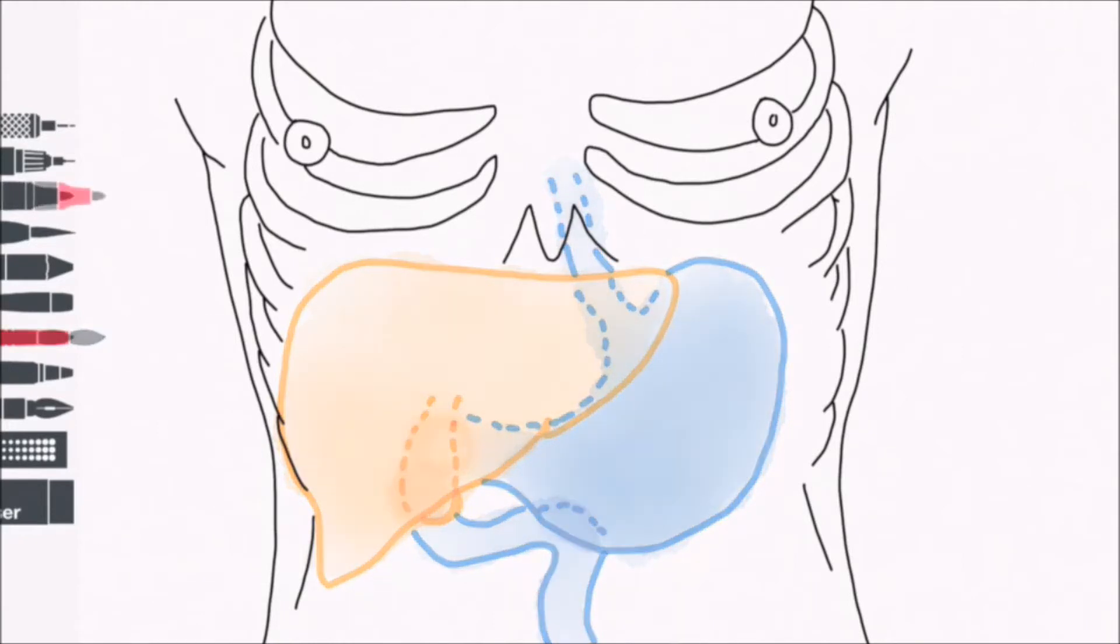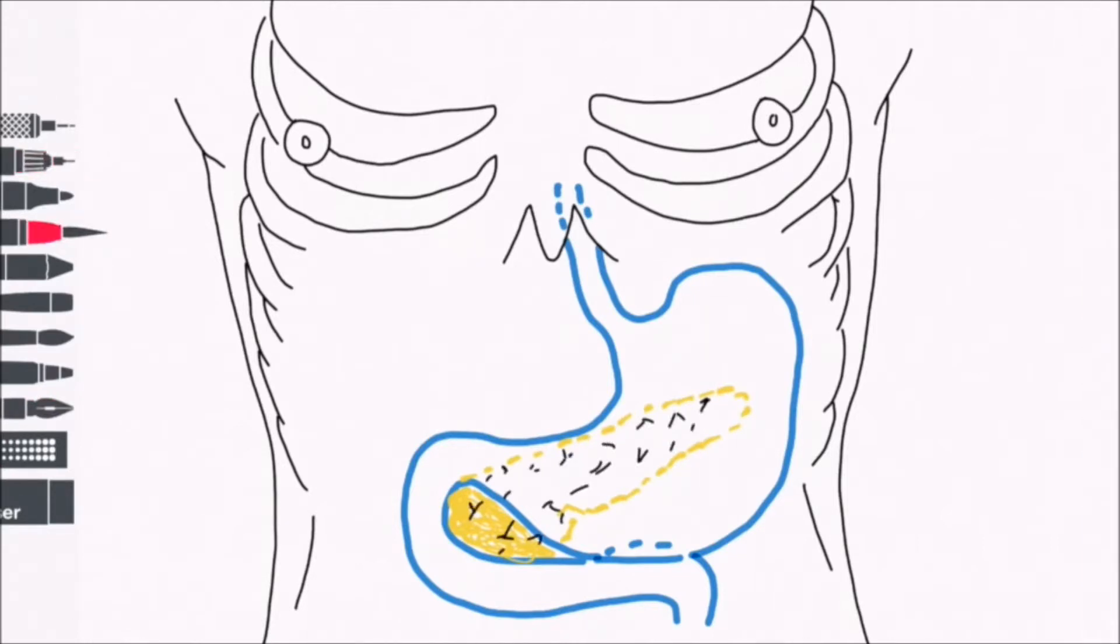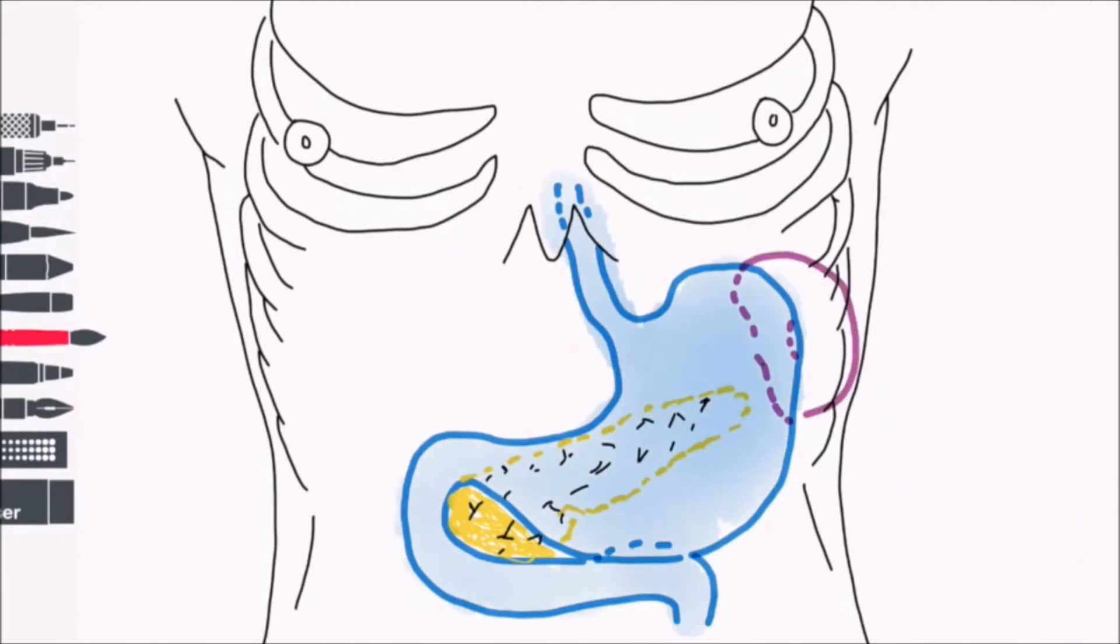Now we've removed the liver and we can clearly see the stomach, the duodenum, and the pancreas, which is actually behind the stomach and tucked into the C-shaped duodenum. I'm also going to show you where the spleen is - it's in the left upper quadrant, tucked behind the stomach.